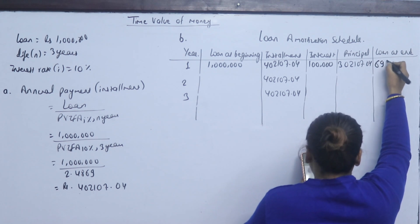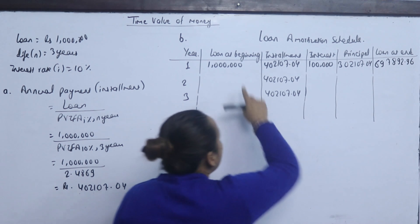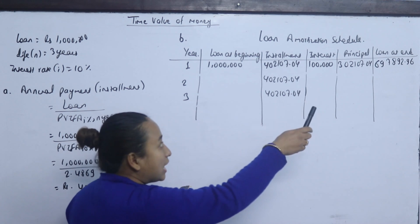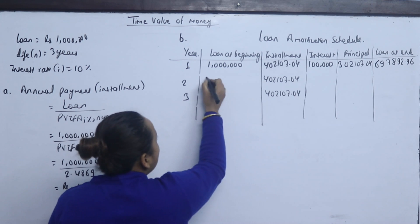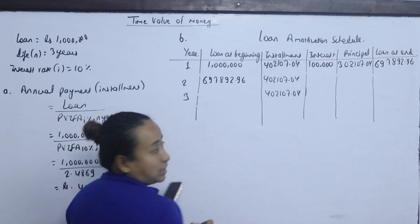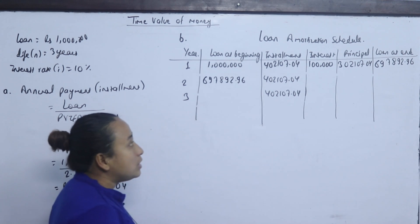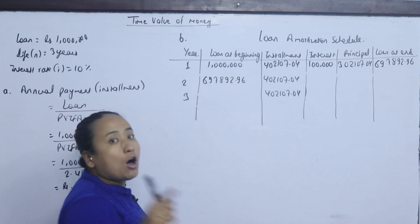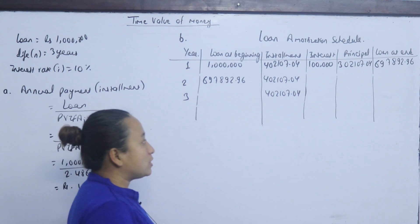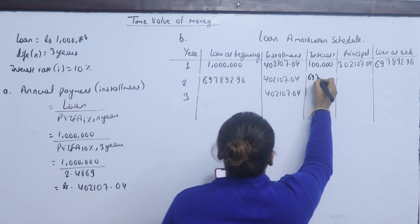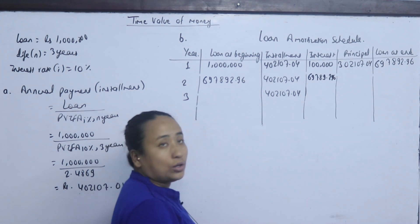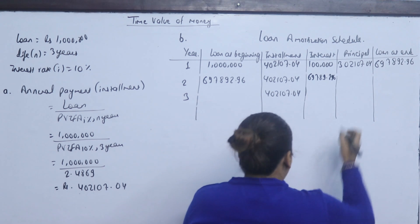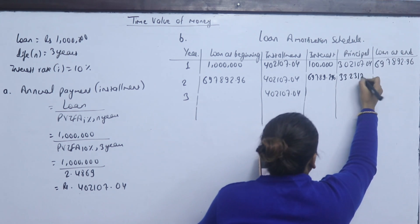So the ending balance after year 1 is 697,892.96. The loan at the beginning of year 2 is therefore 697,892.96. The interest for year 2 is 10% of 697,892.96, which equals 69,789.296.